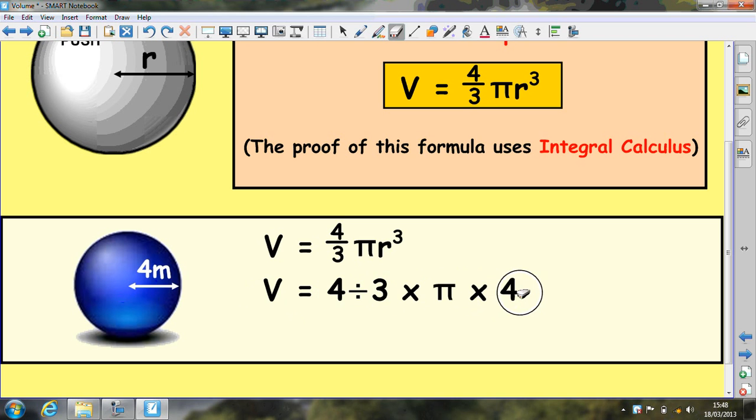Times pi, times 4 cubed, which means 4 times 4 times 4. That's why you get it wrong if you do a square there. You only multiply 4 by itself once. Type all that in and you get 267.95 meters cubed.